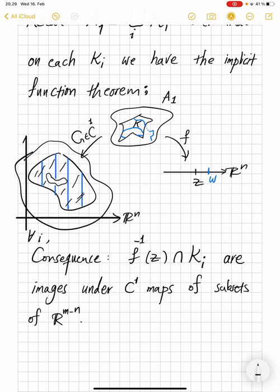So every vertical fiber, vertical line, is a copy of R^{m-n}, which we can identify economically. So every blue in the original domain, this thing here, is the image under g inverse of a subset of R^{m-n}.